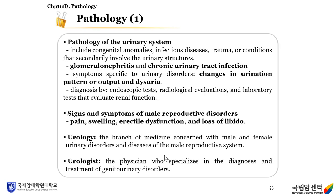Pathology of the urinary system includes congenital anomalies, infectious diseases, trauma, conditions that secondarily involve the urinary structures, glomerulonephritis, and chronic urinary tract infection. Symptoms specific to urinary disorders are changes in urination pattern or output and dysuria. They are diagnosed by endoscopic tests, radiological evaluations, and laboratory tests that evaluate renal function. Signs and symptoms of male reproductive disorders are pain, swelling, erectile dysfunction, and loss of libido. Urology is the branch of medicine concerned with male and female urinary disorders and diseases of the male reproductive system. The urologist is the physician who specializes in the diagnosis and treatment of genitourinary disorders.